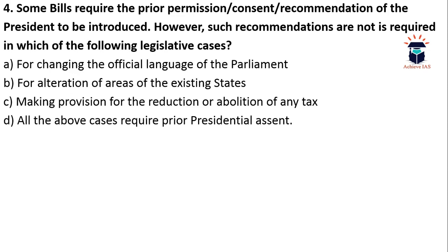The fourth question: Some bills require prior presidential recommendation to be introduced. However, such recommendations are not required in which of the following cases? A) For changing the official language of Parliament, B) For alteration of areas of existing states, C) Making provision for reduction or abolition of any tax, D) All the above cases require prior presidential assent. Option A is correct — changing the official language of Parliament does not require prior presidential recommendation. However, alteration of areas of existing states and making provision for reduction or abolition of any tax both require prior presidential recommendation, so the answer is A.